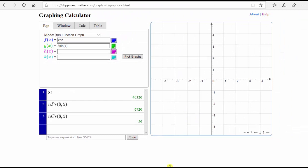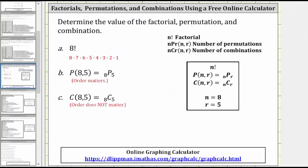Let's record these values. Eight factorial equals 40,320. Eight permute five equals 6,720. Eight choose five equals 56.